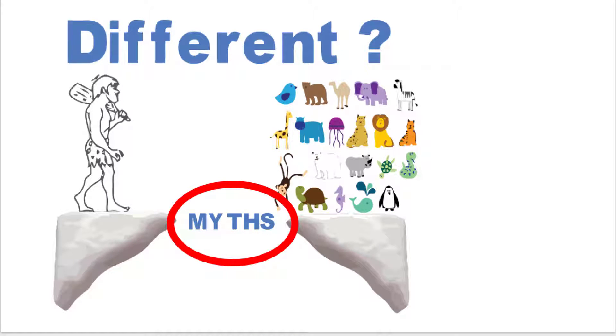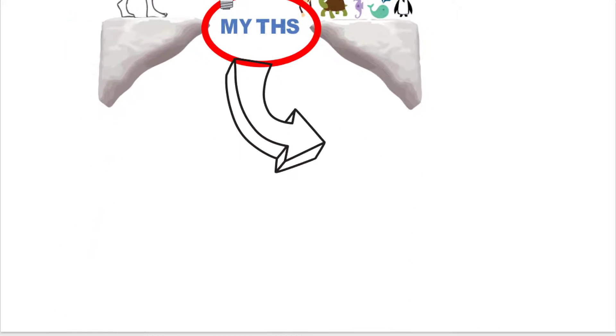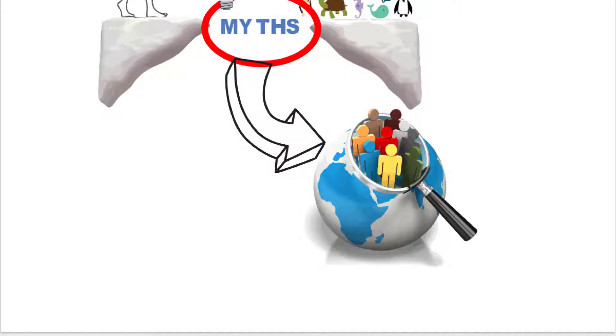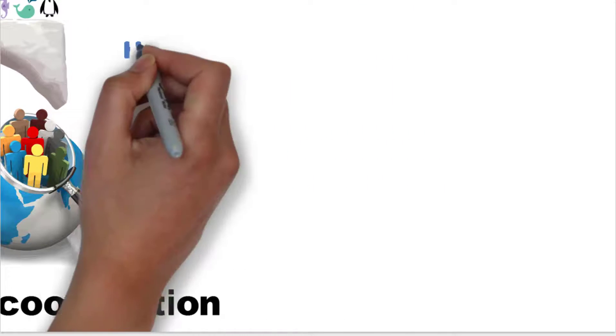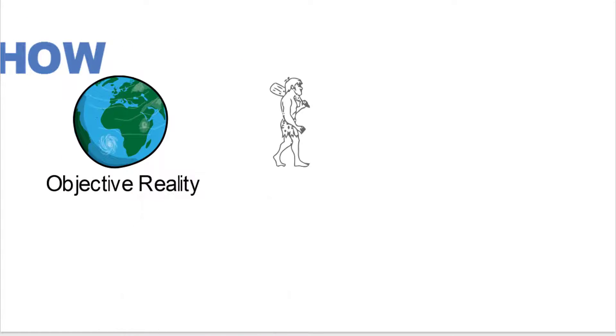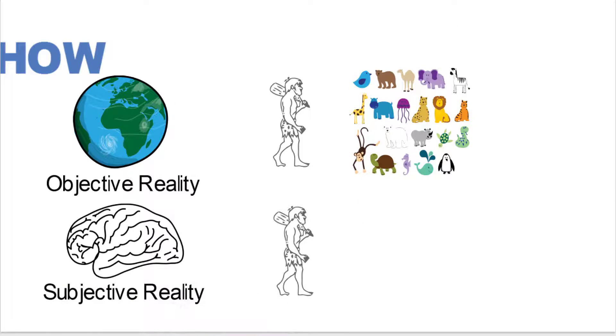And he thinks it's myths. He talks about myths as being the single biggest factor in what makes us different, because myths basically fuel our capability for mass cooperation. And that mass cooperation is basically how we are able to manage things. So he says, let's take a look.